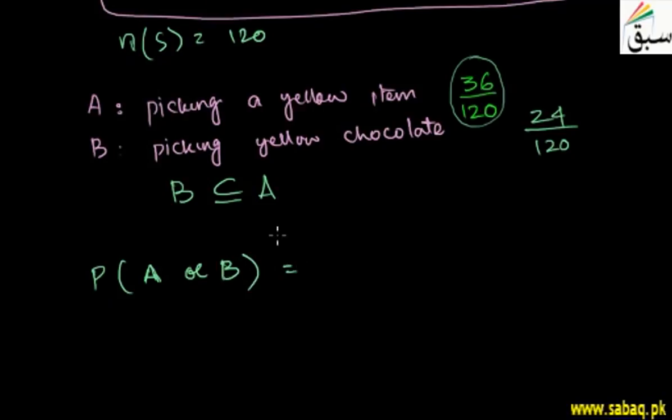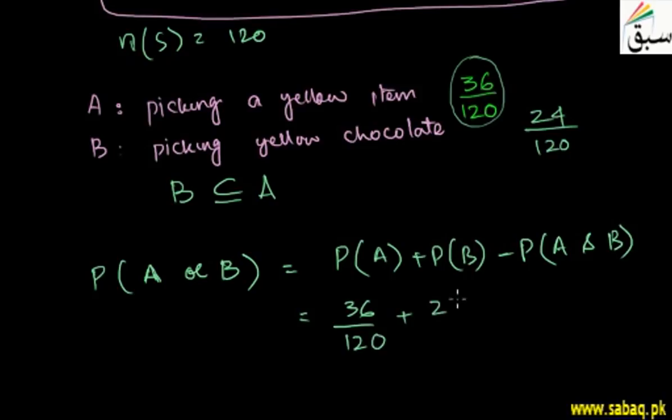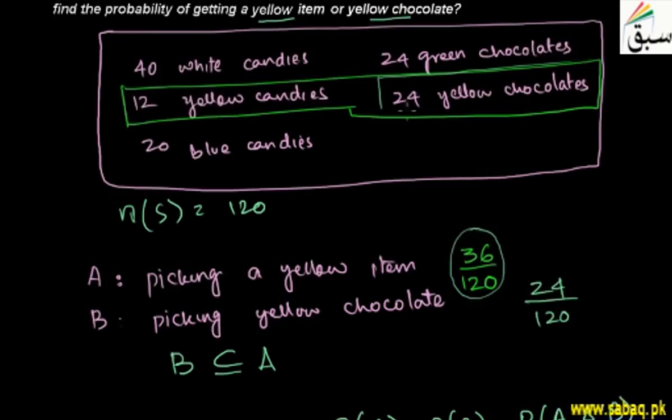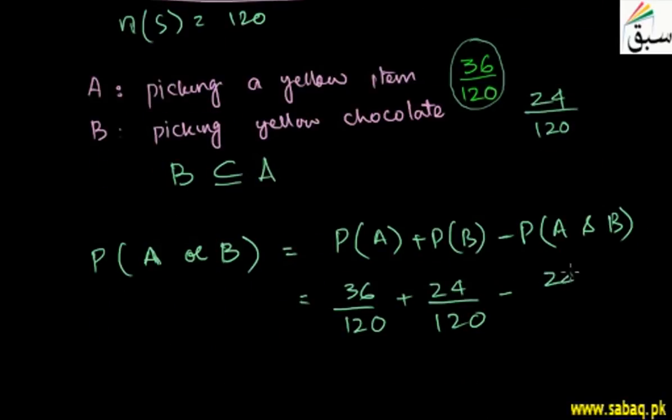Probability of A or B equals probability of A plus probability of B minus probability of A and B. So we can see: probability of A is 36 over 120, probability of B is 24 over 120, probability of A and B - yellow item and chocolate both - is 24 over 120. You can cancel these out, so 36 over 120 is the answer.